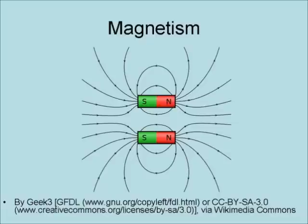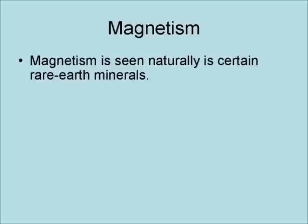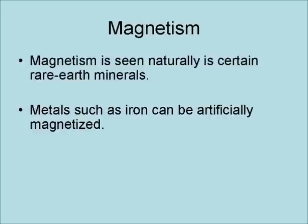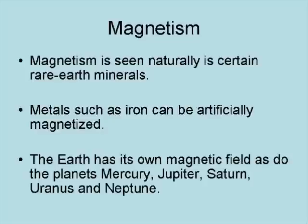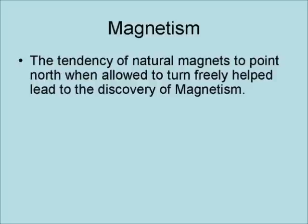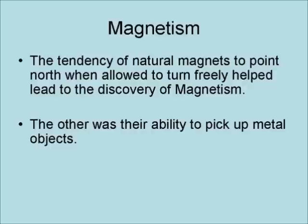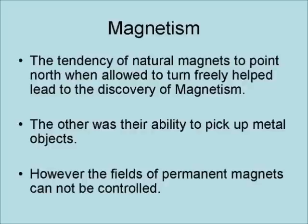This is an illustration of the magnetic field around two parallel cylindrical magnets. Magnetism occurs naturally in certain rare-earth minerals. Ferromagnetic metals such as iron can be artificially magnetized. The Earth has its own magnetic field, as do the planets Mercury, Jupiter, Saturn, and Uranus. The tendency of natural magnets to point north when allowed to turn freely helped lead to the discovery of magnetism, as did their ability to pick up metal objects. However, the fields of permanent magnets cannot be controlled.